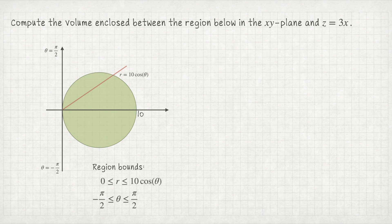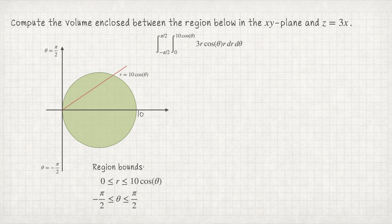Now we have the bounds for our double integral. Because r is trapped between 0 and a function of theta, it must be the inside integral, and theta's constant bounds go on the outside. The double integral to compute the volume is from −π/2 to π/2 and from 0 to 10cosθ of the integrand: 3x converted to polar is 3r cosθ, and we pick up an extra factor of r from the polar conversion, giving 3r²cosθ, dr dθ.